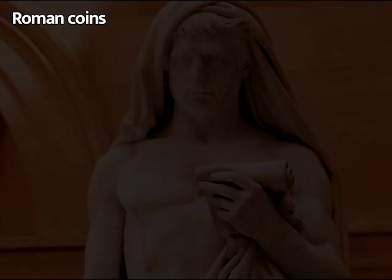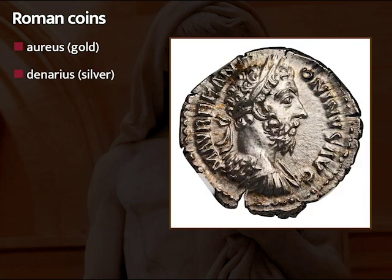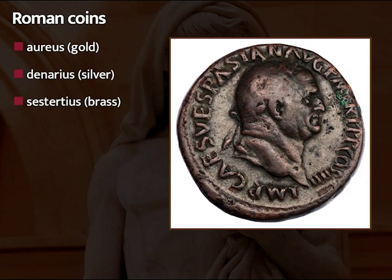A little bit about Roman coinage. The Aureus is the gold coin, seldom seen. The workhorse coins are the Denarius and the Sestertius — these are the main coins you hear about in the literature and see examples of.